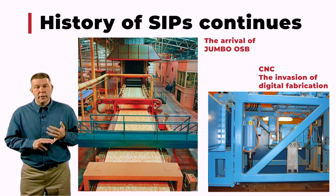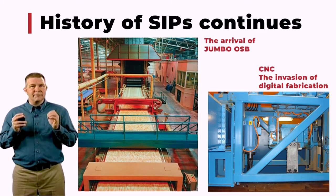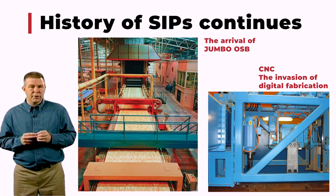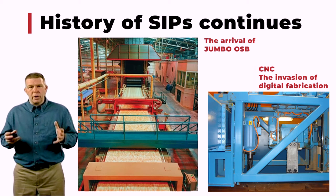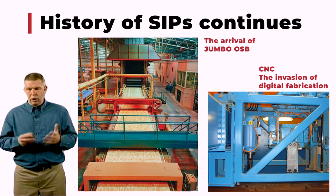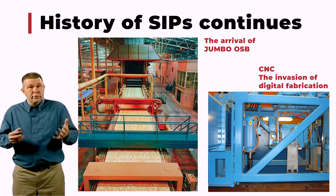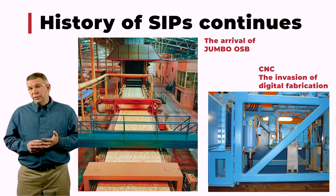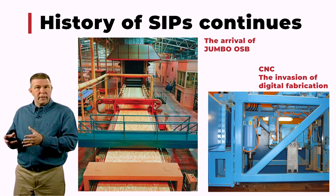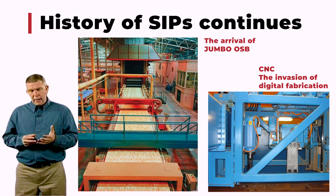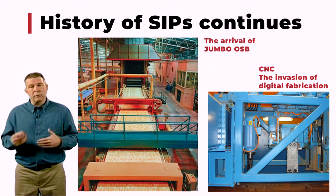One major technical advance came from the machine industry and the other from the OSB industry. From the machine side, companies were importing highly sophisticated equipment using CNC technology — computer numeric control. Back in the 90s, there was not a single CNC cutting fabrication machine used in SIP production — it was all hand cutting, with carpenters snapping lines and pulling out a saw. But with CNC advances, we can now combine computer-aided drawing with computer-aided manufacturing. These CNC capabilities have created huge growth in potential and also driven the price of SIPs down as fabrication efficiency has increased.